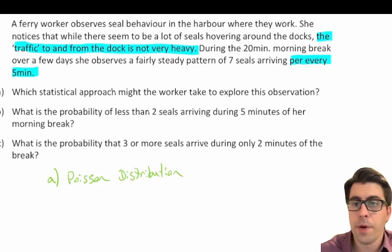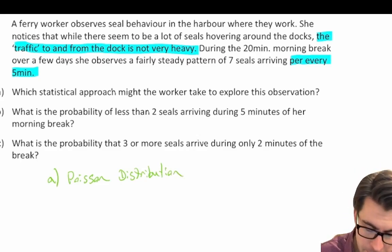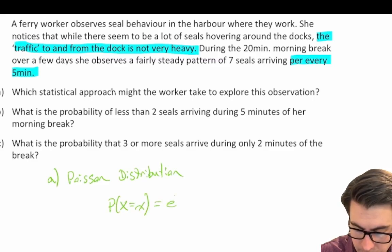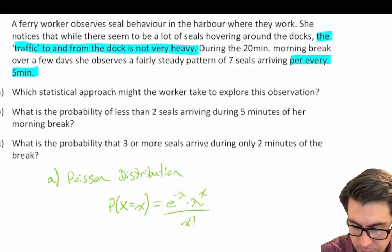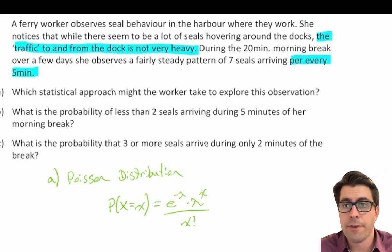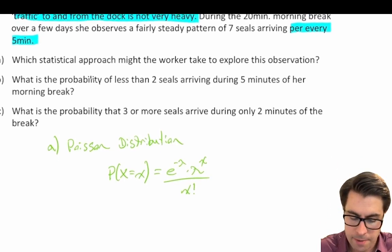We write a probability model: the probability that X equals x is equal to e to the power of negative lambda, times lambda to the power of x, divided by x factorial. That's all we need for Part A — we've identified the Poisson distribution as the statistical approach.